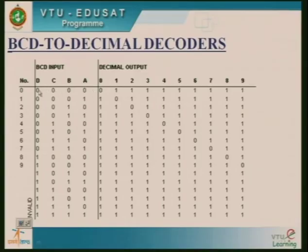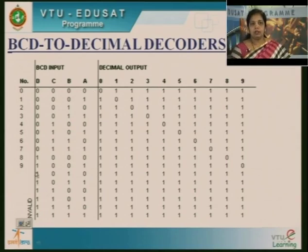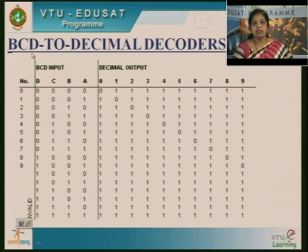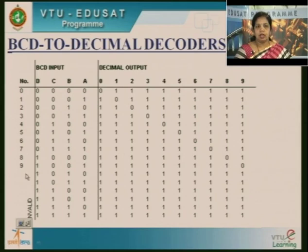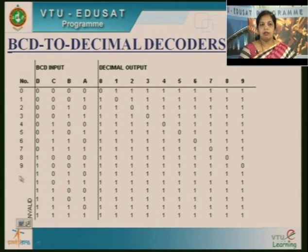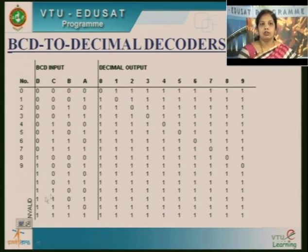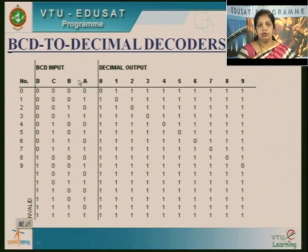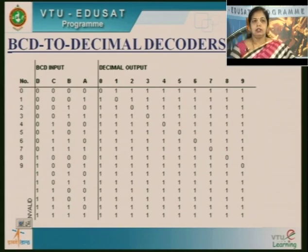You can see the truth table here. We have BCD inputs — even though 4 control signals generate 16 combinations, we consider only 10. Since we treat this as BCD, BCD represents 0 to 9, so inputs are from 0 to 9. After 9, these are treated as invalid inputs. Whenever I give input 0,0,0,0, since it is active-low, the first output is low and the rest are all high. At a time, only one output is active.